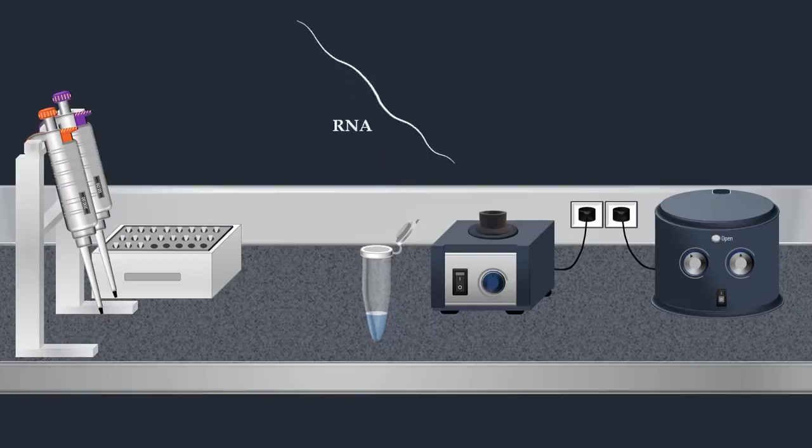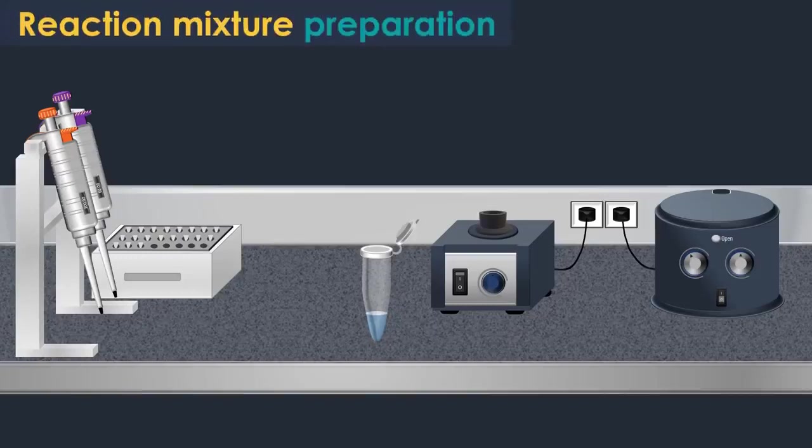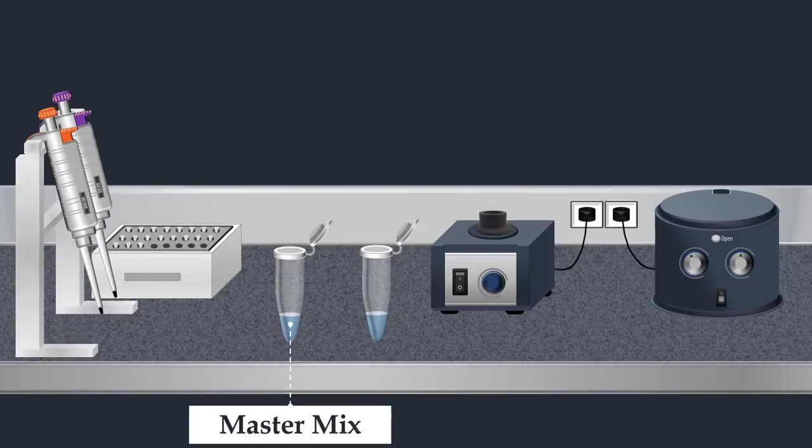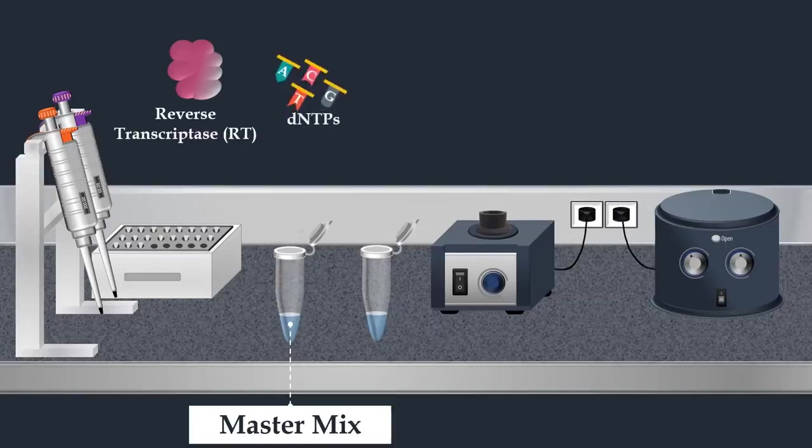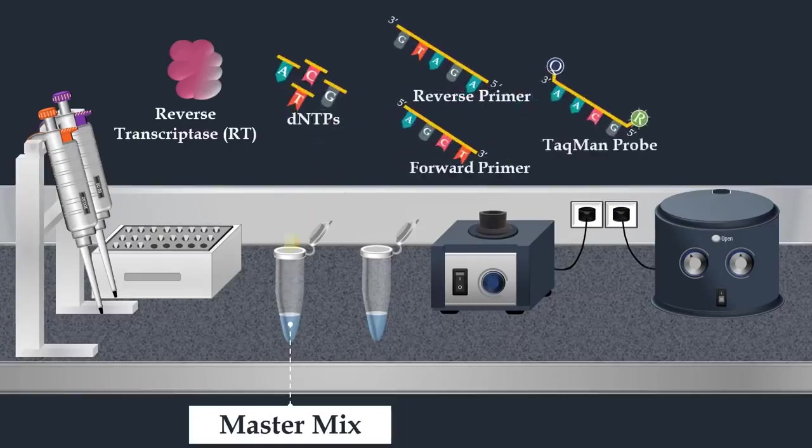After the extraction of viral RNA, the next step is the preparation of the reaction mixture for PCR amplification. In this step, a master mix is used which is a pre-mixed concentrated solution that consists of buffer, reverse transcriptase enzyme, nucleotides, forward primer, reverse primer, Taqman probe, and DNA polymerase.